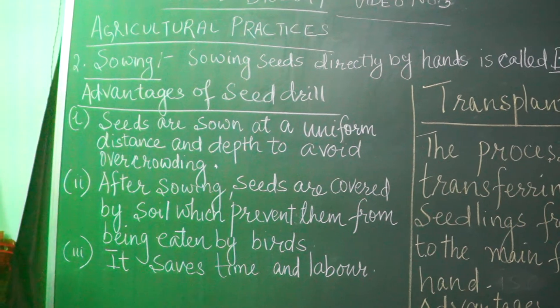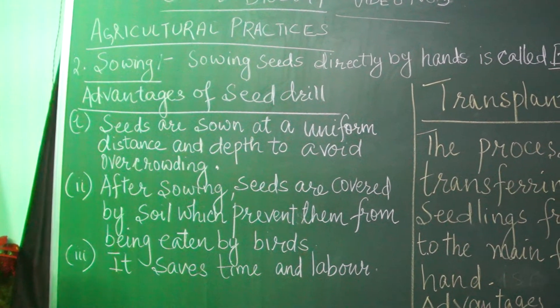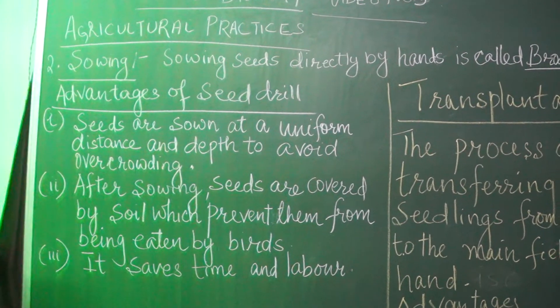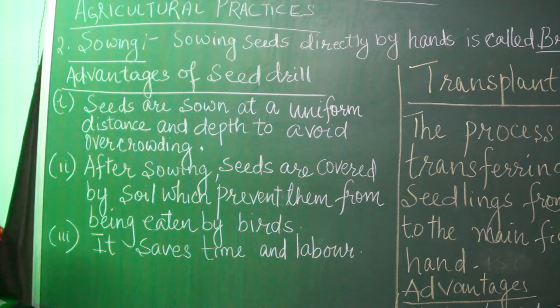Nowadays, a tool called a seed drill is used for sowing seeds with the help of tractors. The seed drill has a funnel shape — the seeds are filled in the funnel and are passed down through two or three pipes with sharp ends. These ends pierce into the soil and place the seeds there. Farmers are using seed drills for sowing the seeds.